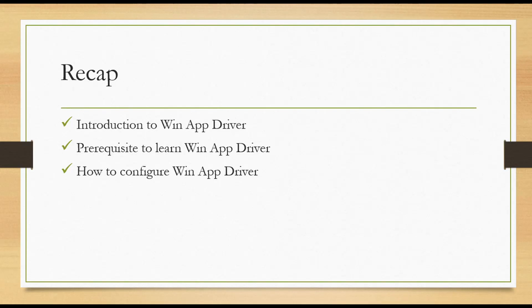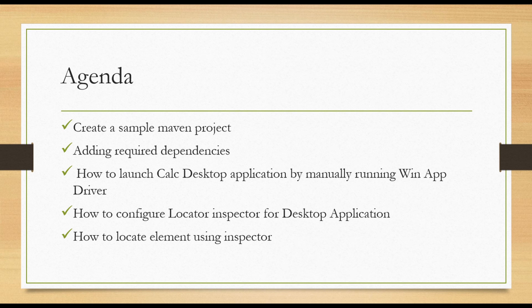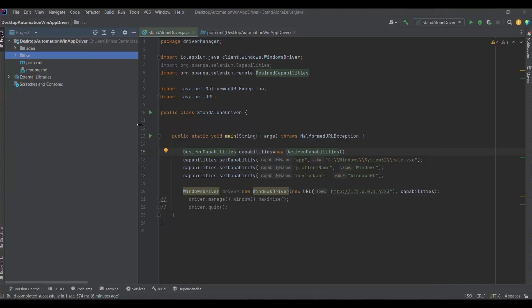Welcome back. In our previous lecture we discussed what WinAppDriver is, the prerequisites to learn it, and how to configure it. In this lecture we are going to discuss how to create a sample Maven project, add the required dependency to automate desktop applications using WinAppDriver, launch the calculator desktop application by manually running WinAppDriver, configure a locator inspector, and locate elements using the inspector.